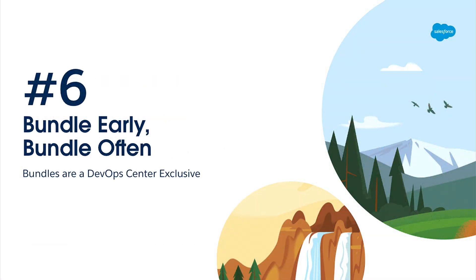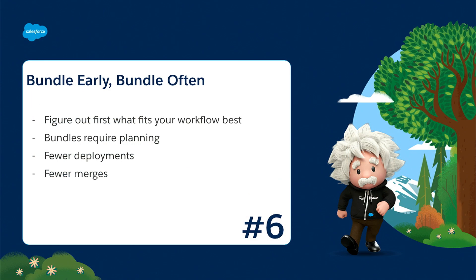Bundle early, bundle often — this tip comes from the DevOps Center product managers. While it takes a little planning because you can't change a bundle's content once it's created, it's a great way to discipline yourself into a structured release cycle. It also helps you avoid too many merges, which puts strain on DevOps Center, and it reduces the number and complexity of deployments, because DevOps Center does some nice things in the background that we'll cover shortly.